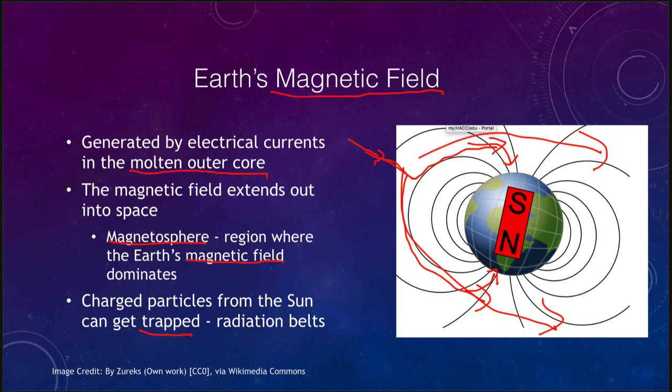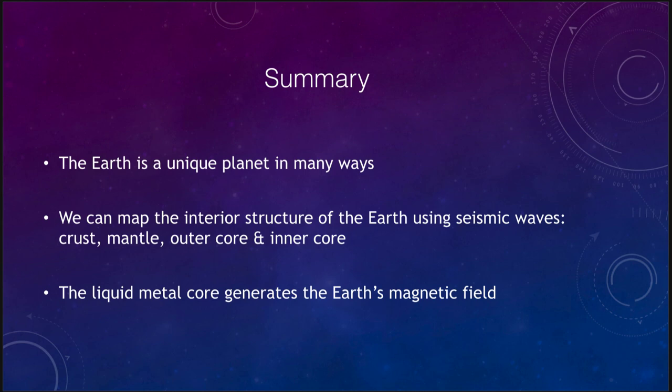So finishing up here with our summary, let's look at what we've gone over this time. We talked about how the Earth is a unique planet in many ways. We talked about water, the only planet with liquid water on its surface. We talked about oxygen and we talked about life as several things that are very unique to the Earth. We learned how we can map the interior structure of the Earth using seismic waves. And we divided the Earth into four parts: a crust, the part we live on and can explore; the mantle; the outer core; and the inner core. And we learned that the liquid metal core and currents in that are what generates the Earth's magnetic field and protects us from charged particles from the sun. So that concludes our lecture on the interior structure of the Earth.